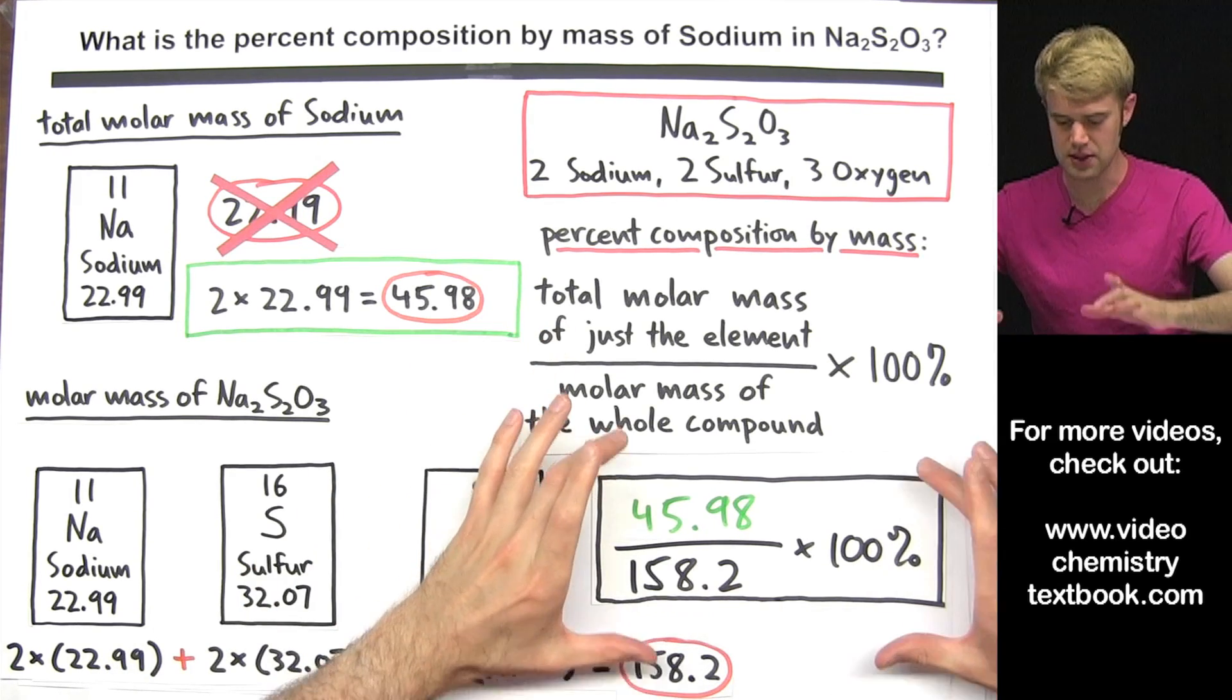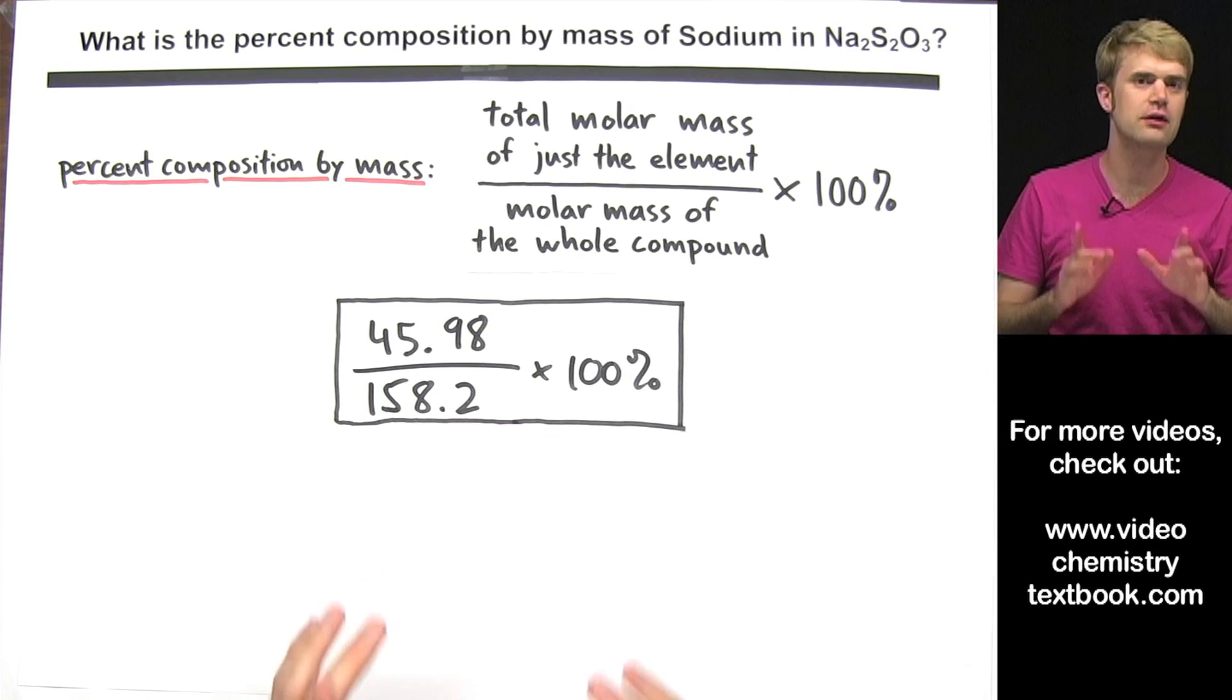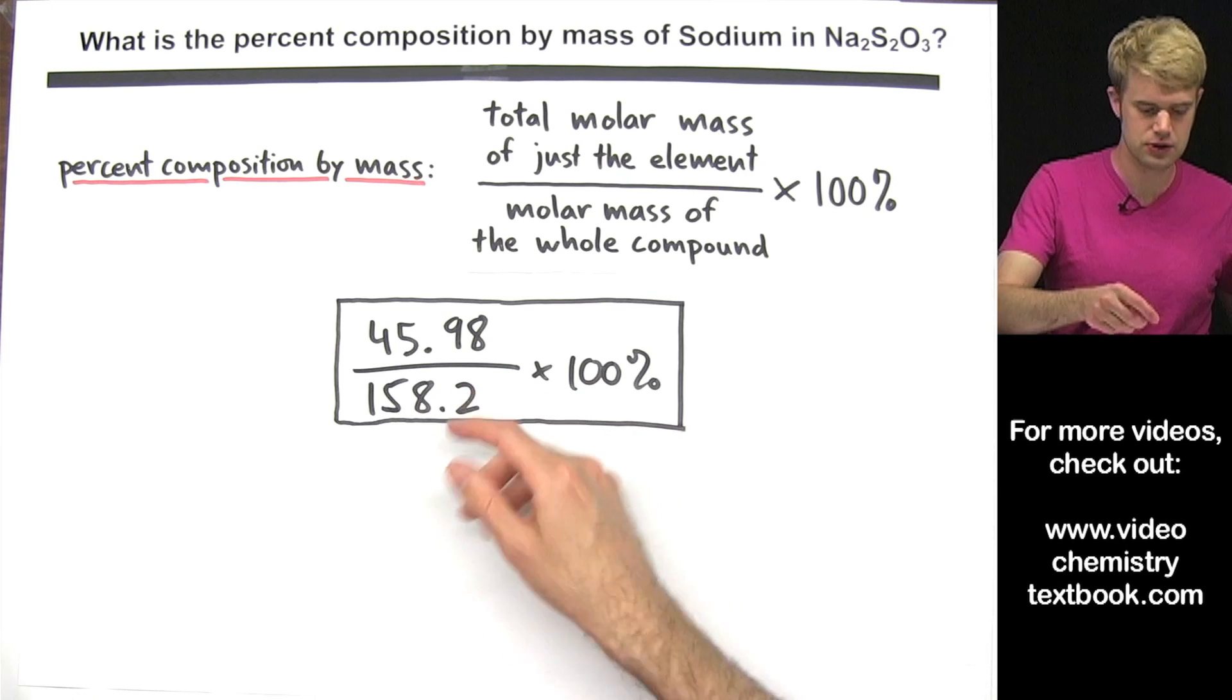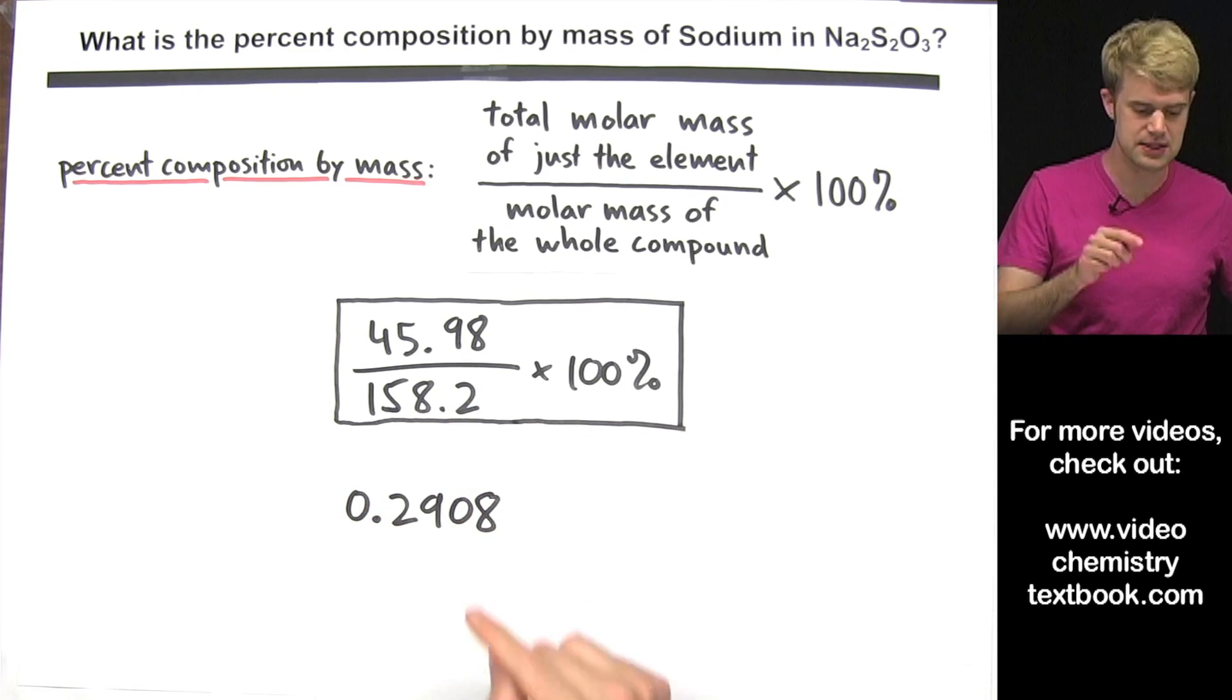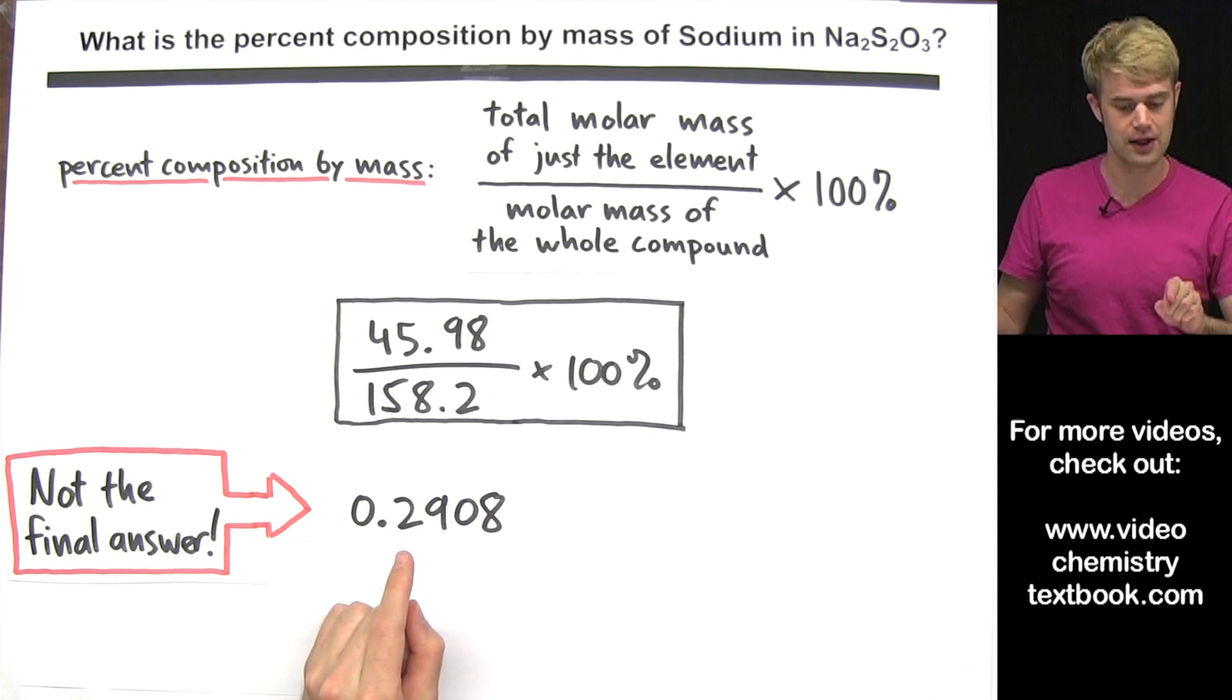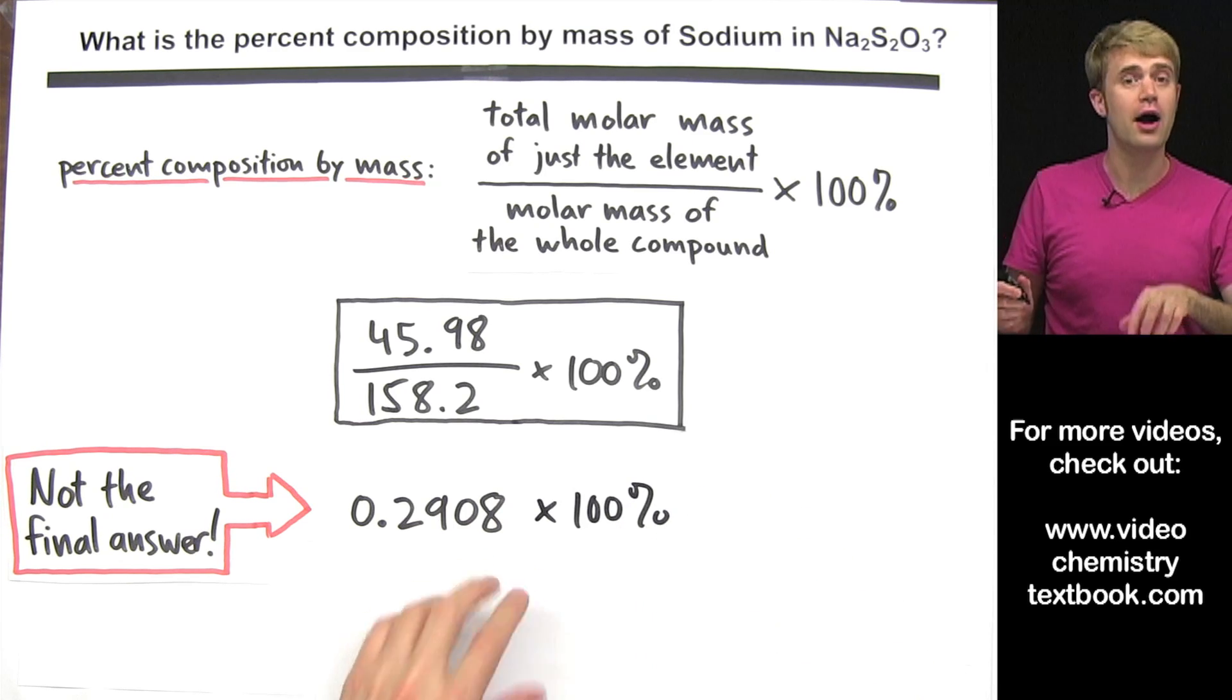Now, the second common mistake has to do with this calculation right here. Here's the math you'll do as part of the final step of the problem. When you divide this by this, you get this. Now, the mistake that a lot of people make is they leave this as their final answer but this is not the final answer because you still have to multiply by 100%.